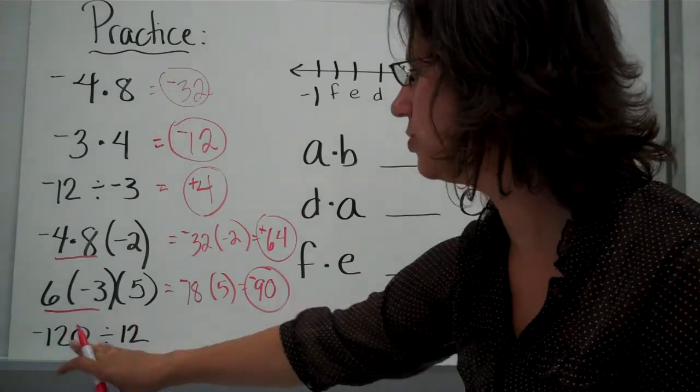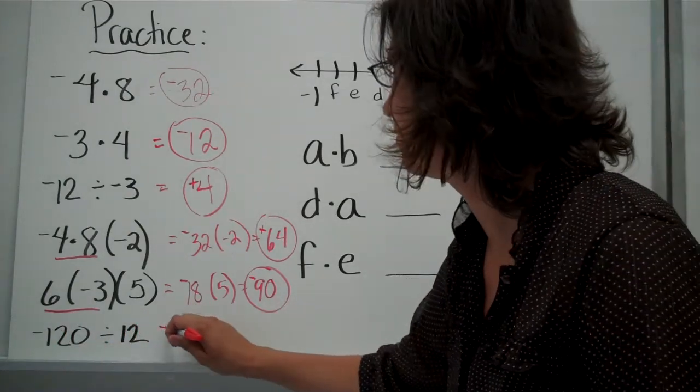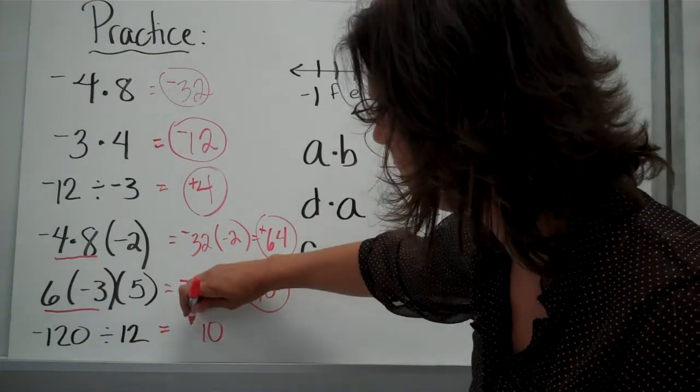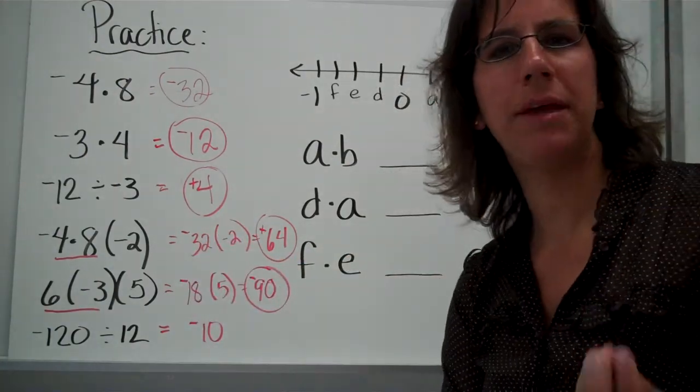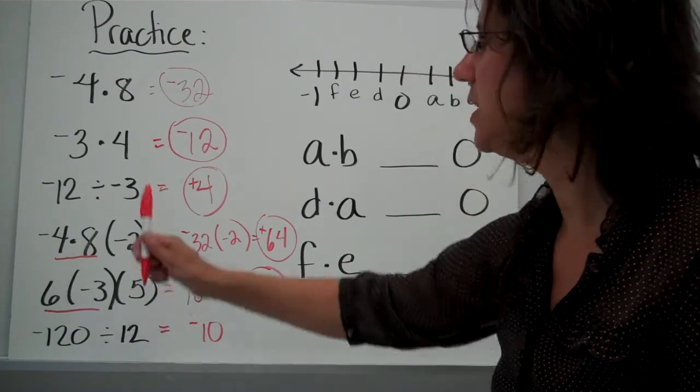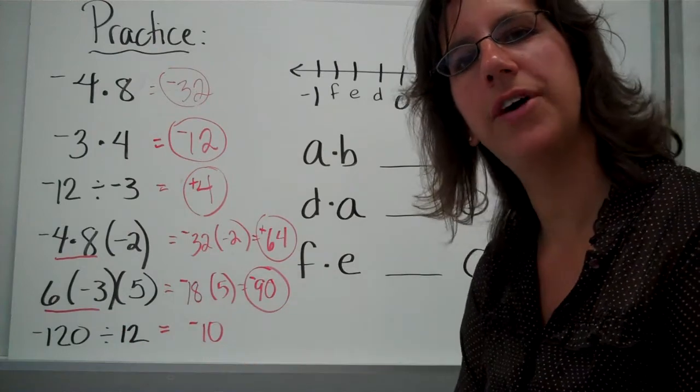And now this last one, negative 120 divided by 12 is 10. And the signs are different, so it's negative. So you want to keep repeating that to yourself over and over again. Same signs positive, different signs negative. It does not matter whether you're multiplying or dividing.